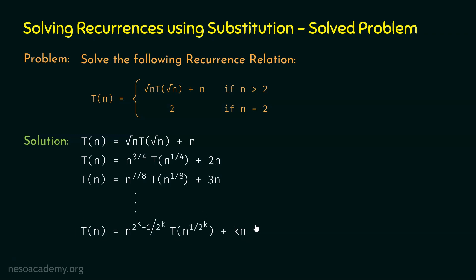We need to represent k in terms of n, since n is the input size. We also need to eliminate T(n^(1/2^k)) by reaching the base case. Let's assume n^(1/2^k) = 2, so we reach T(2) = 2. Taking log base 2 on both sides, the left side becomes (1/2^k) · log₂n, and the right side becomes 1.